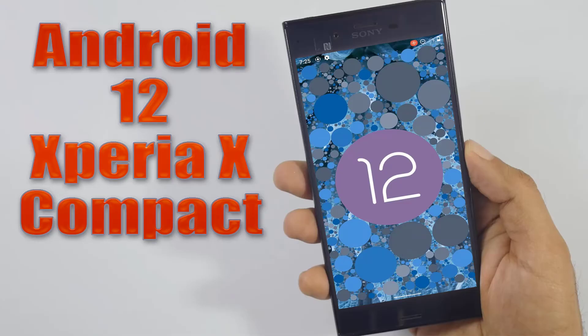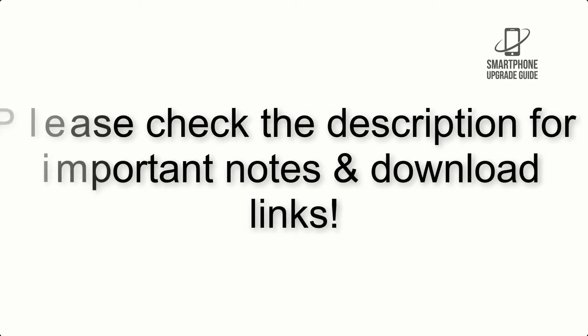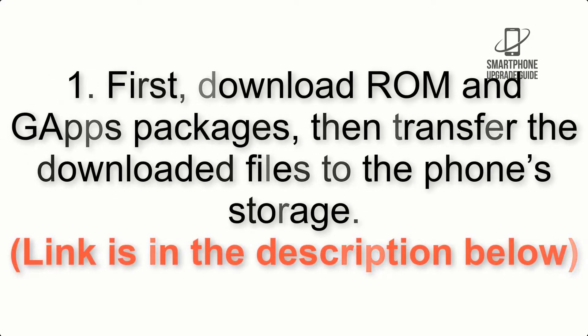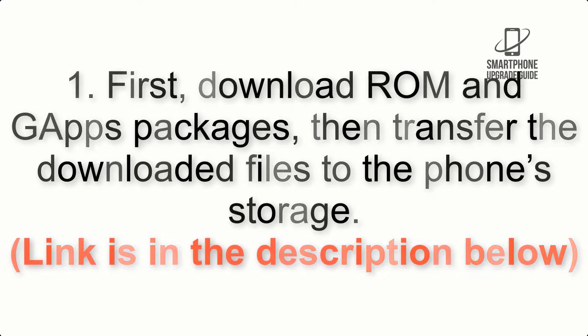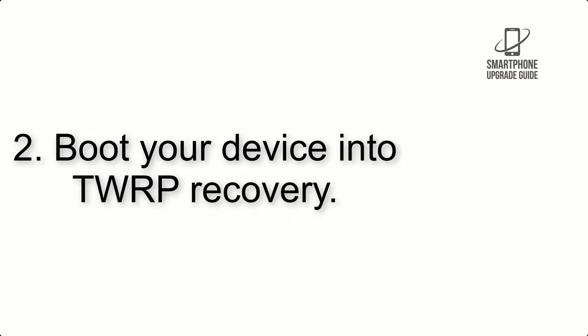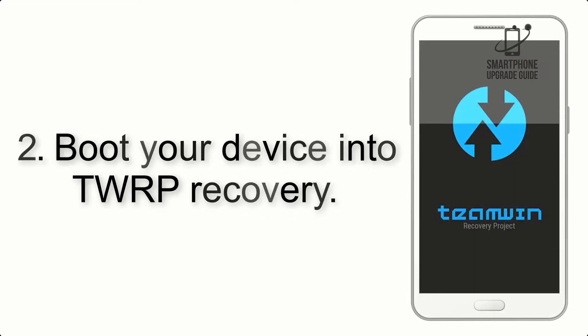Install Android 12 on Xperia X Compact via Lineage OS 19.1. Please check the description for important notes and all the download links. First, download the ROM and GApps packages, then transfer the downloaded files to the phone storage. The link is in the description below.